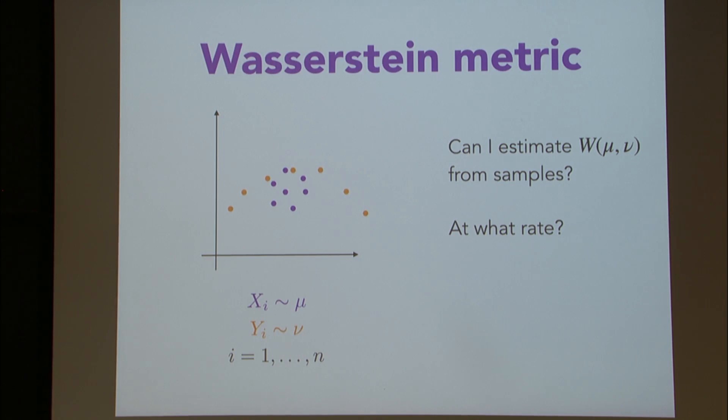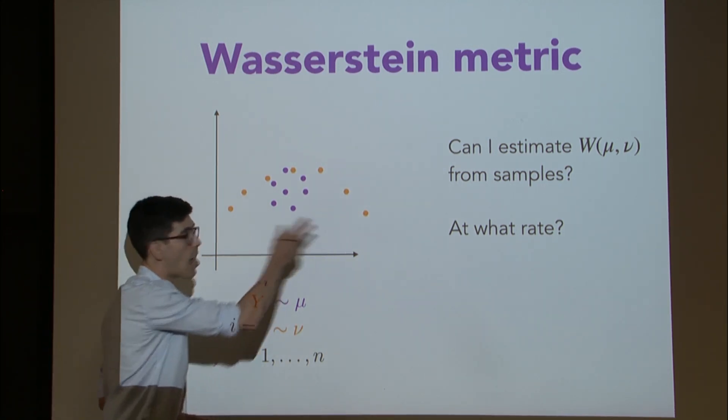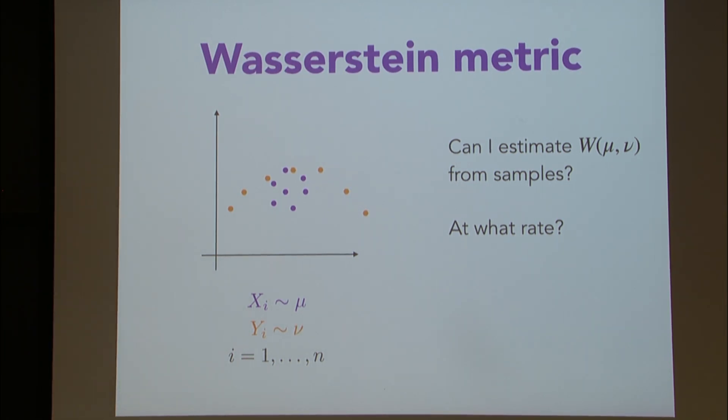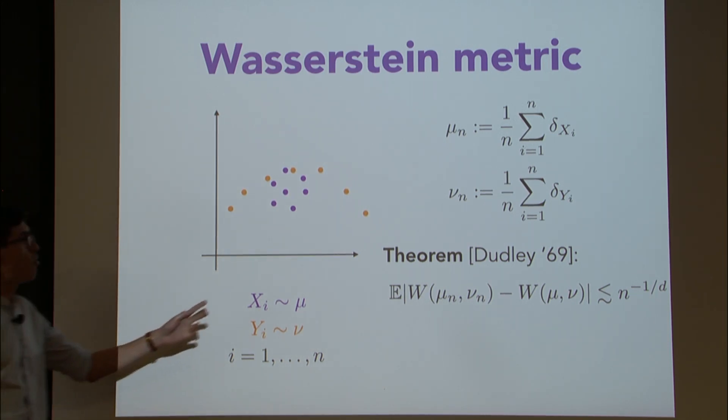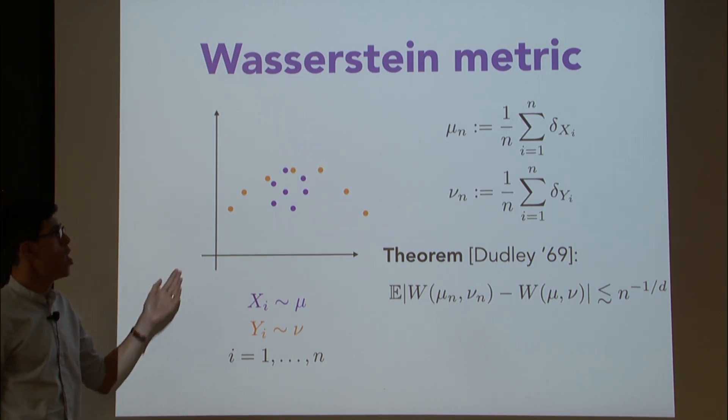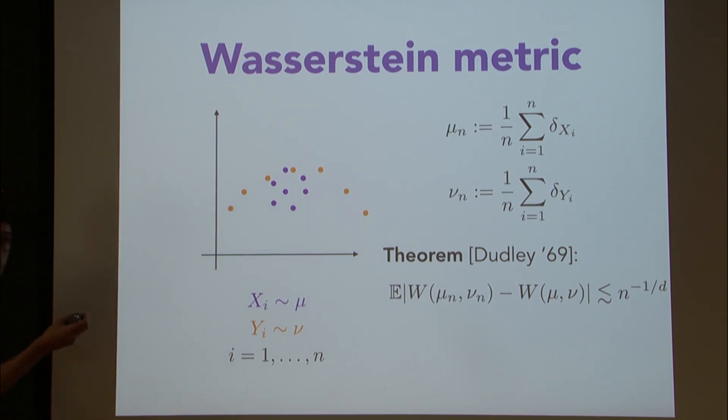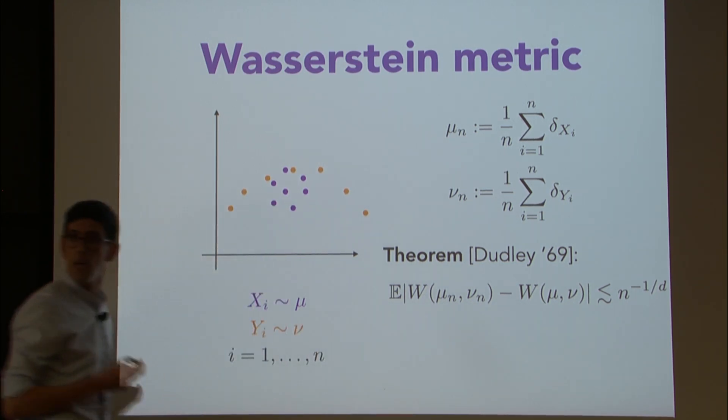So all I wanted to say is that the natural statistical question is if I have samples from two distributions, mu and nu, I want to pick up perturbations in the same way. Before I knew what I could do for means, but I should ask whether it's possible to estimate the size of the Wasserstein distance between these two distributions on the basis of samples and how quickly I can do it, in the sense of how quickly does the error decay as n increases.